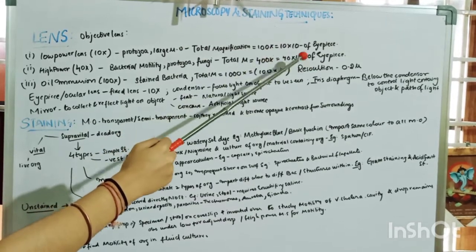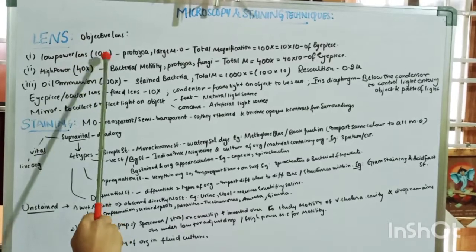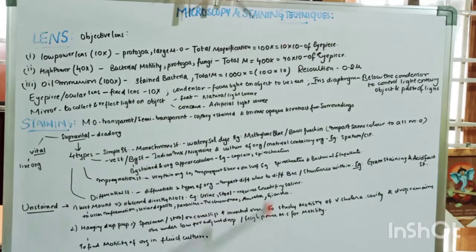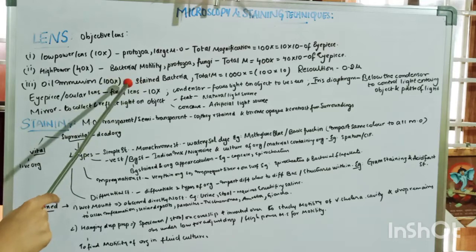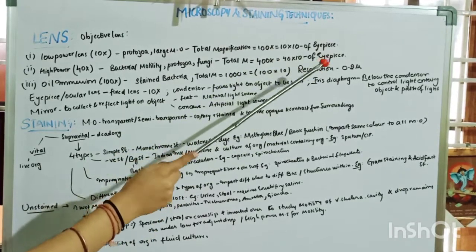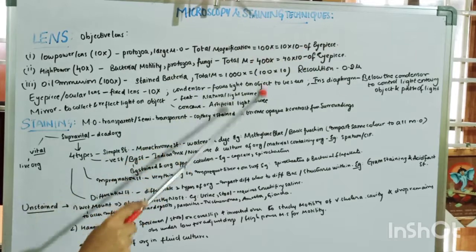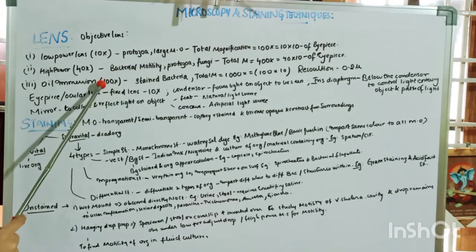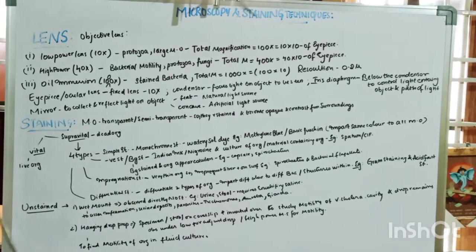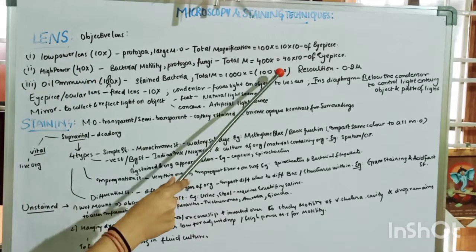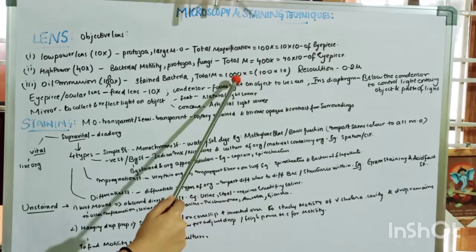The low power lens (10x) is used to look at protozoa and larger microorganisms. The total magnification is 100x, that is 10x objective multiplied by 10x eyepiece. The high power lens is 40x and is used to see bacteria, motility, protozoa, and fungi — giving a total magnification of 400x. The oil immersion lens is 100x and is used to look at stained bacteria, giving a total magnification of 1000x. The oil immersion resolution power is 0.2 microns.